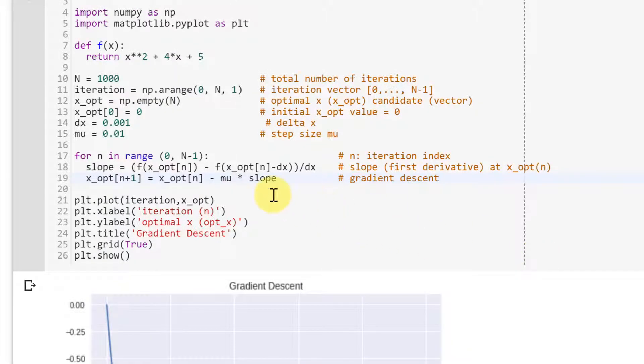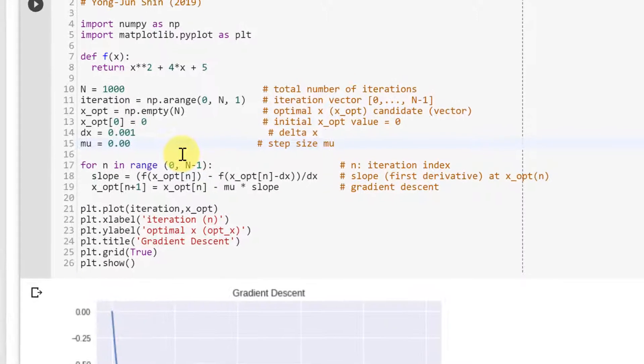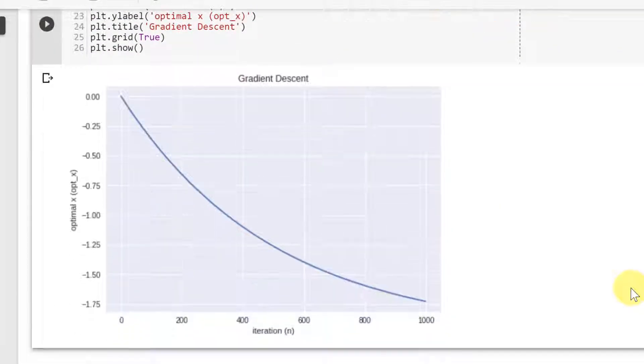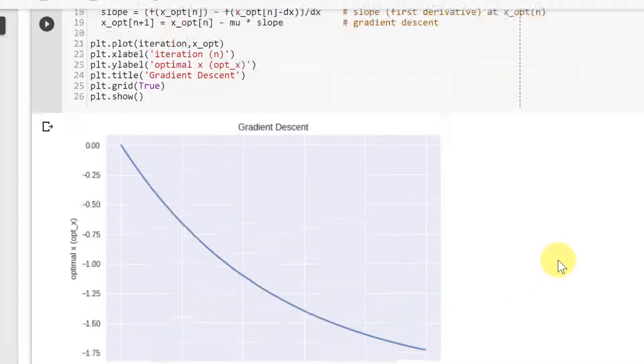Now, let me change this step size. Let's make it 0.001. Let's make it smaller and see what happens. Even after like 1,000, we are not still close to negative 2.